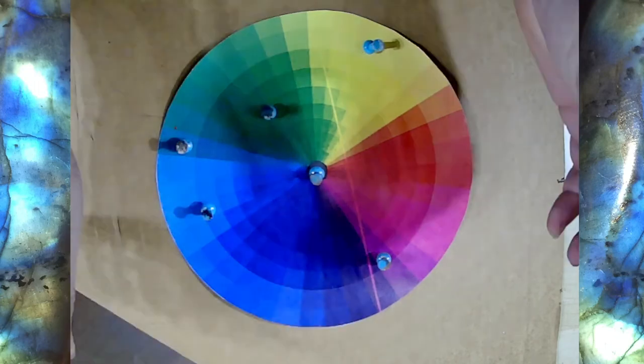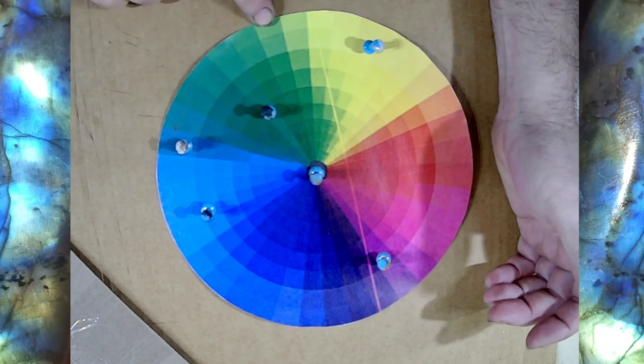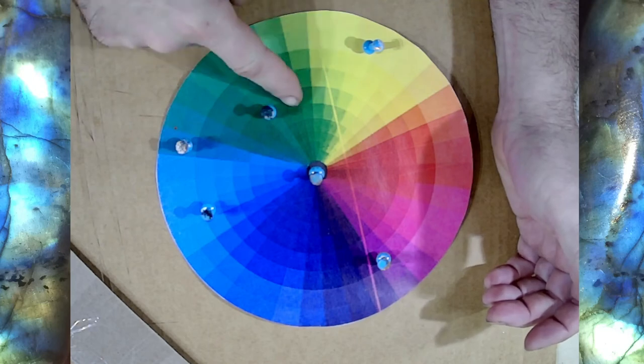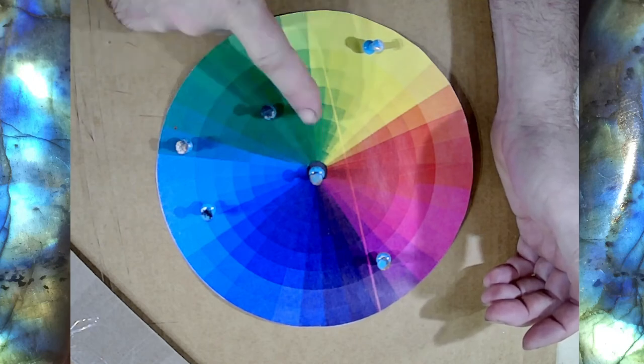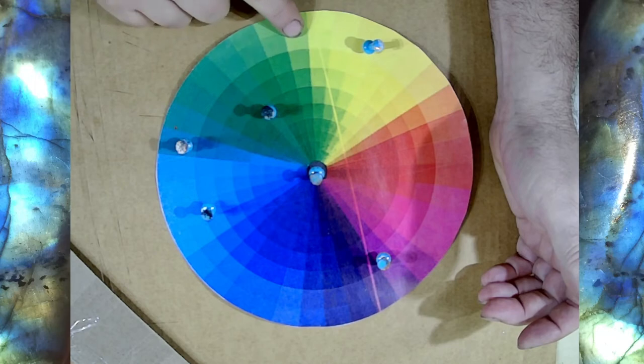So, in general, if you were to add black to any of the colors on the outside, you'll move farther and farther towards the inside. And if you were to add white to any of the colors on the inside, you'd move further and further toward the outside.